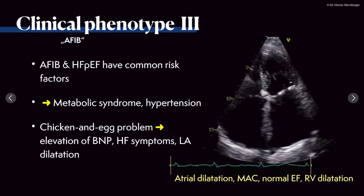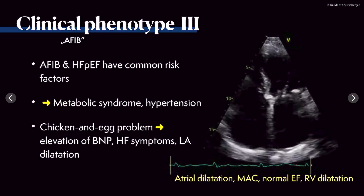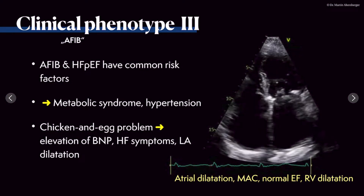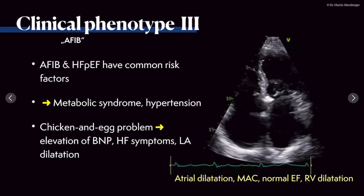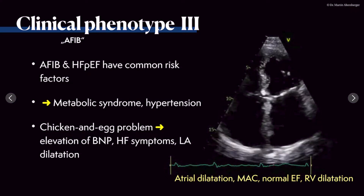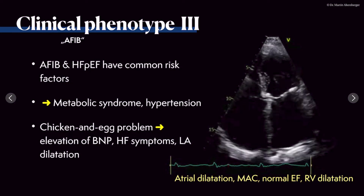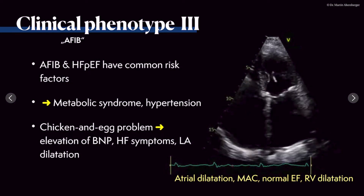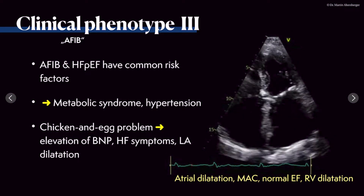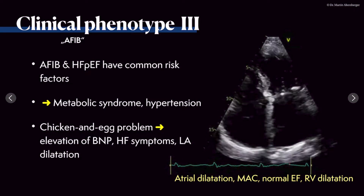In the context of this clinical phenotype of atrial fibrillation, we have to note that AFib and HFpEF have common risk factors — the metabolic syndrome and hypertension — and we have the so-called chicken-and-egg problem: what came first, atrial fibrillation or HFpEF? Was it HFpEF leading to AFib, or atrial fibrillation leading to heart failure with preserved ejection fraction? Overall, the consequence is an elevation of BNP — the brain natriuretic peptide — heart failure symptoms, and left atrial dilatation.